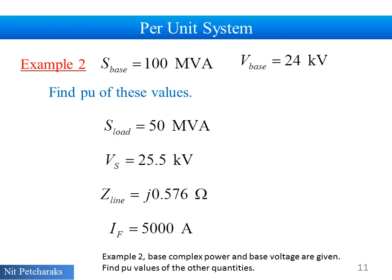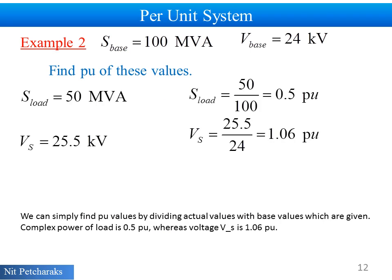Example 2: base complex power and base voltage are given. Find per unit values of these other quantities. We can simply find per unit values by dividing actual values with base values which are given. Complex power of load is 0.5 per unit. Whereas, voltage Vs is 1.06 per unit.